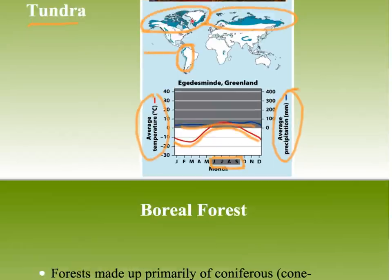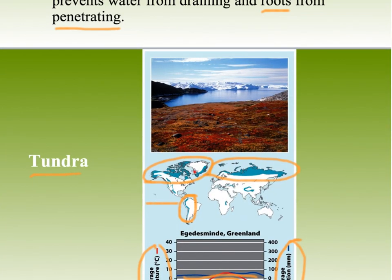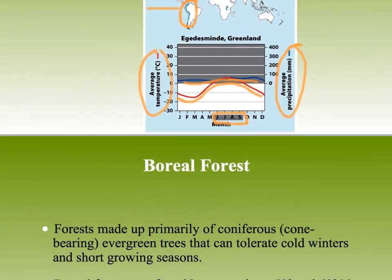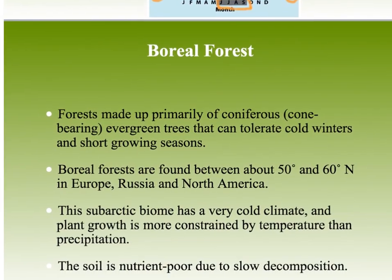There are also growing problems in the tundra: higher latitudes are warming up faster than the rest of the globe, so the permafrost is melting and there's an increase in methane release from bog-type areas.